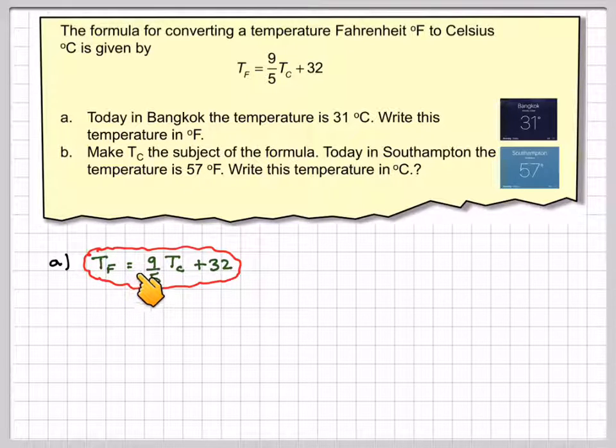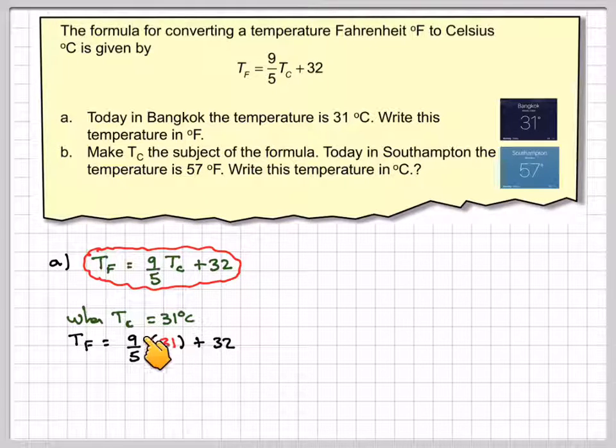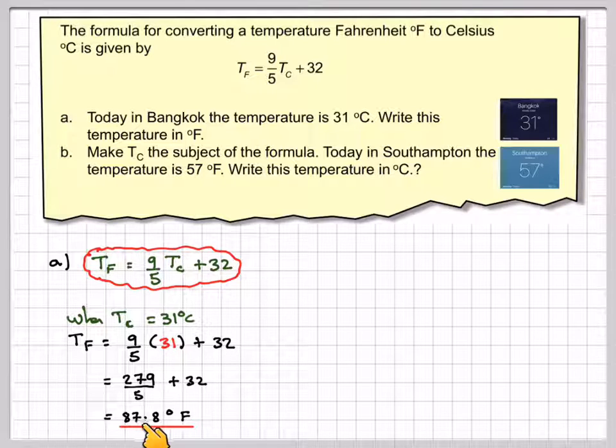So Tf equals 9 fifths of Tc plus 32. It's just a matter of substituting in. When Tc is 31, Tf will be 9 fifths times 31 plus 32. Doing this on my calculator first by doing 9 times 31 divided by 5, you get 279 divided by 5 plus 32, which equals 87.8 degrees Fahrenheit.